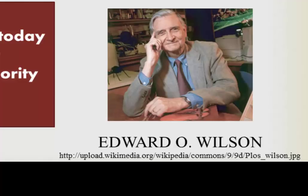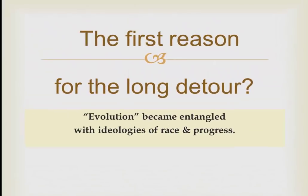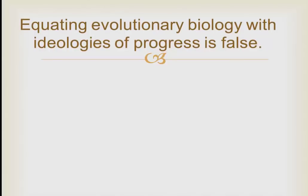However, it's very important to note that evolutionary biology today supports neither of these perspectives — and indeed it provides some of our strongest critical resources to challenge them. To summarize, the first reason for the long detour around evolutionary biology is simply that evolution and biology became entangled with the politics of race, progress, and eugenics in the early 20th century. Quite reasonably, many scholars interested in humans cut off evolution and biology from the study of humans at that time. But this is a false equation today.